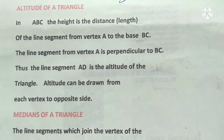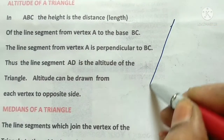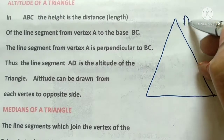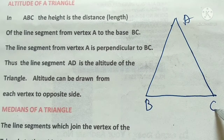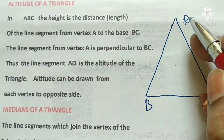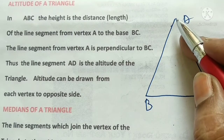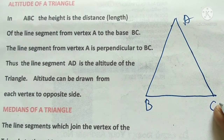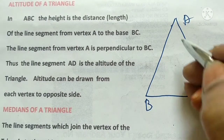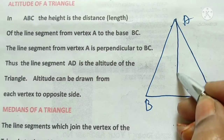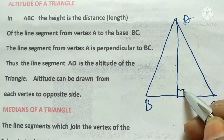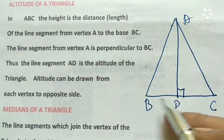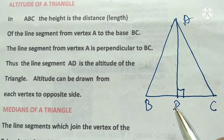Now, what is the altitude of a triangle? We draw triangle ABC. Vertex A is opposite side BC. The perpendicular drawn from vertex A to the opposite side BC meets at point D. AD is perpendicular to BC, and we call AD the altitude.